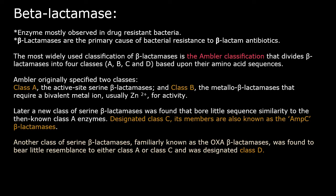Later, a new class of serine beta-lactamases was found that bore little sequence similarity to the then-known class A enzymes — there was little sequence homology from class A. So this new class was designated as class C, and its members are also known as AmpC beta-lactamases.